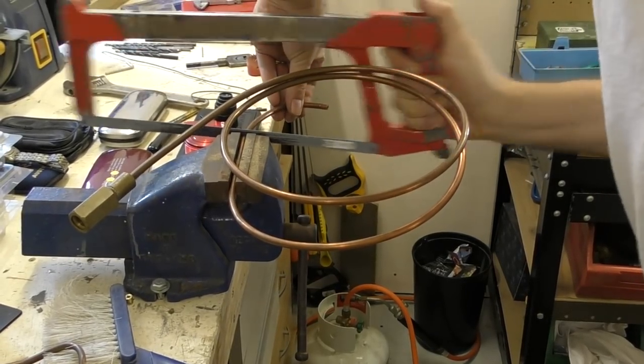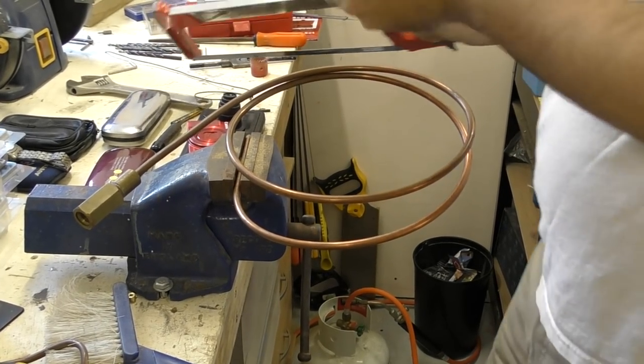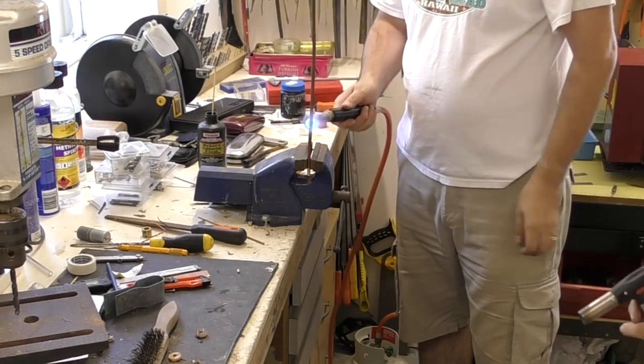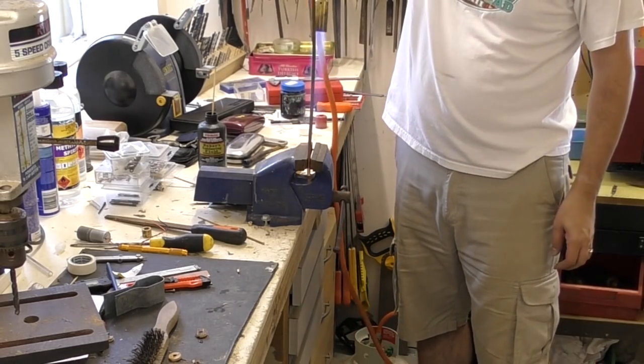To connect everything up we're using this thick walled copper tubing. We first cut it up into the various lengths we needed. We then heat treated them to make them softer which makes them easier to bend.